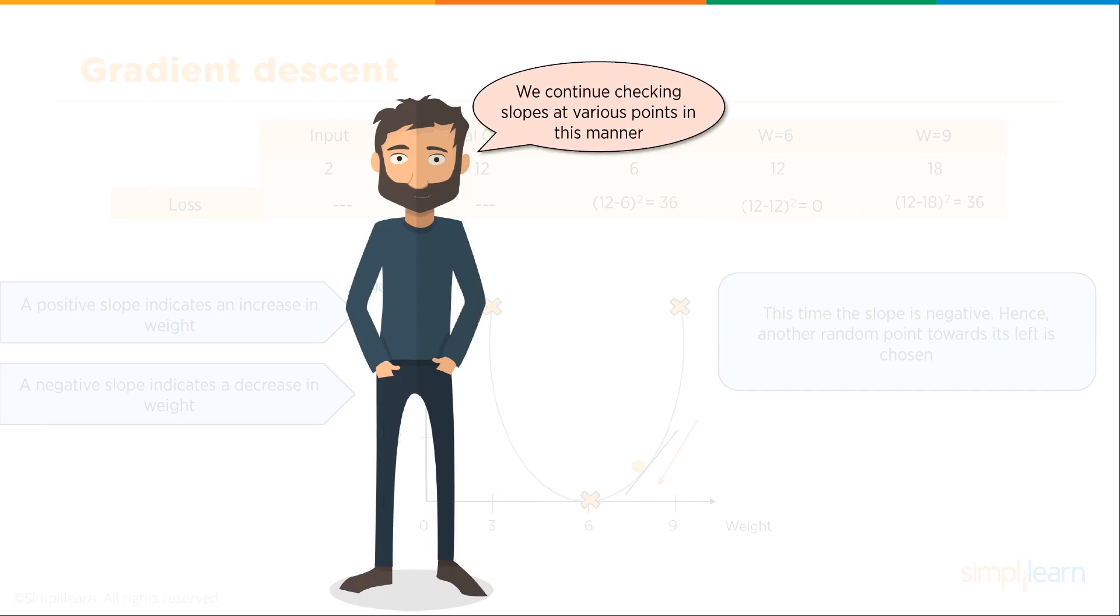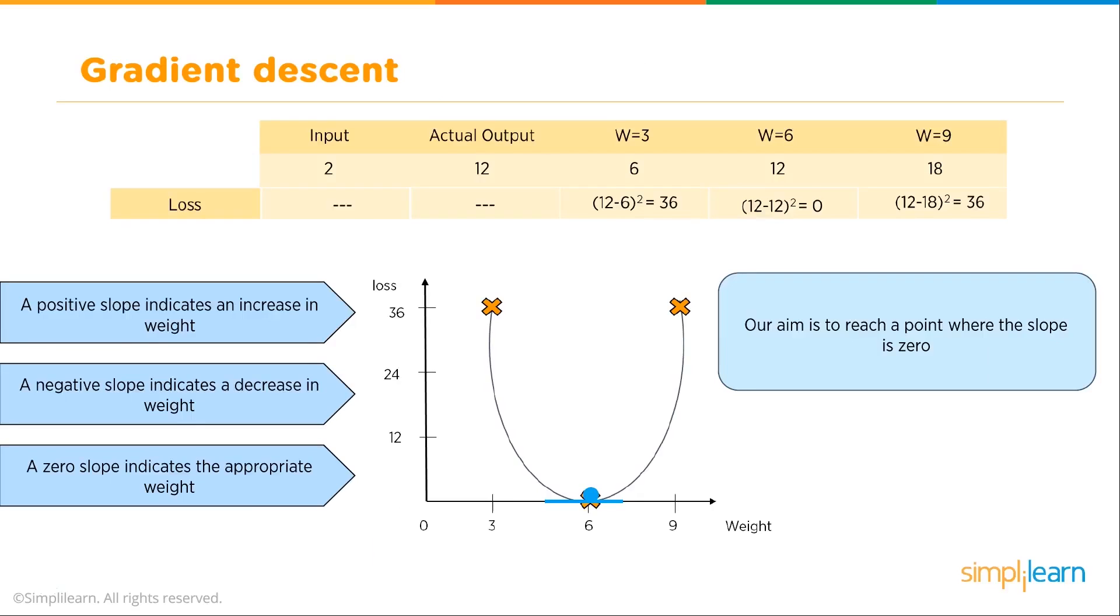We continue checking slopes at various points in this manner. We have our input, actual output, W3, W6, W9. We found our positive slope indicates an increase in weight, a negative slope indicates a decrease in weight. A zero slope indicates the appropriate weight. Our aim is to reach a point where the slope is zero. When we talk about neural networks, you're usually processing a massive amount of information and data. So you're not going to have all your data nice and neat where it's just a multiple of six. It's going to be messy. We're going to keep approaching that number, but you'll never get everything to fit at zero. You're going to get stuff all over the place. So you're really looking for the minimum value. You're not looking for an absolute zero because you're not going to get it.